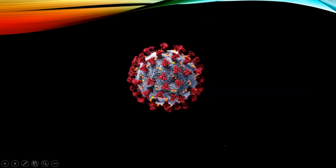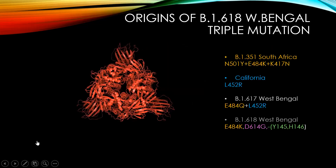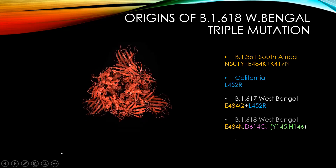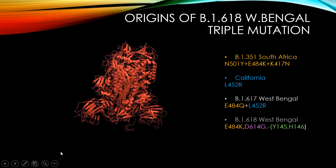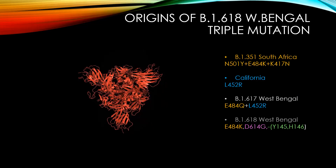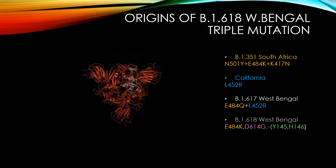Coronavirus got the word corona from crown. The crown is this red part, which is called the spike protein. This spike protein can be understood from the structural perspective. You can see the red part here, which is the spike protein. If we flip it up, we can see the receptor binding domain in gray.